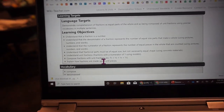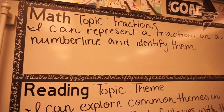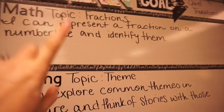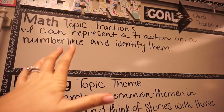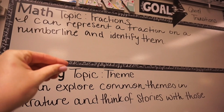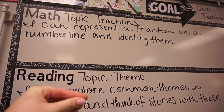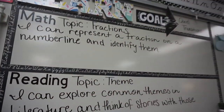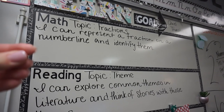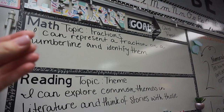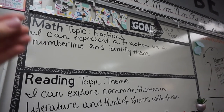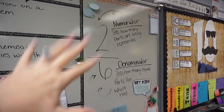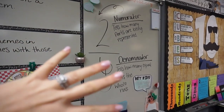Each day I have a different learning target or I build upon them. For example, yesterday's learning target was 'I can represent a fraction on a number line and identify them' — so students both built their own number lines and put fractions on them, and also identified fractions on already-created number lines. You want to be very cognizant of what you actually want your students to be able to do at the end of your lesson.